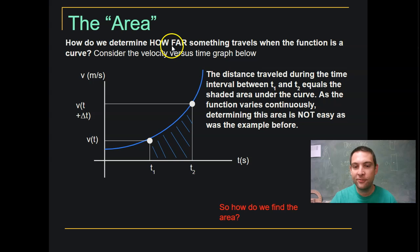How do we determine how far something travels when the function is a curve? Consider the velocity versus time graph below where now we have exponential increase. The distance traveled during the time interval between t1 and t2 equals the shaded area under the curve. As the function varies continuously, determining this area is not as easy as the example before.